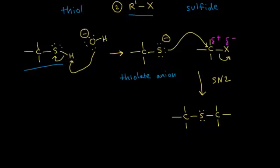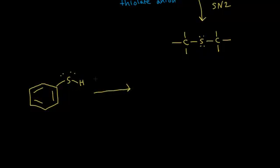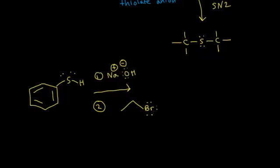Let's do an example of the preparation of a sulfide. We're going to start with this molecule — a thiol — and to that thiol we're going to add sodium hydroxide in the first step. Then in the second step, we're going to add an alkyl halide — ethyl bromide. When I think about the mechanism, the first step is an acid-base reaction. The electrons on the hydroxide anion take the acidic proton on the thiol, leaving these electrons behind on the sulfur.